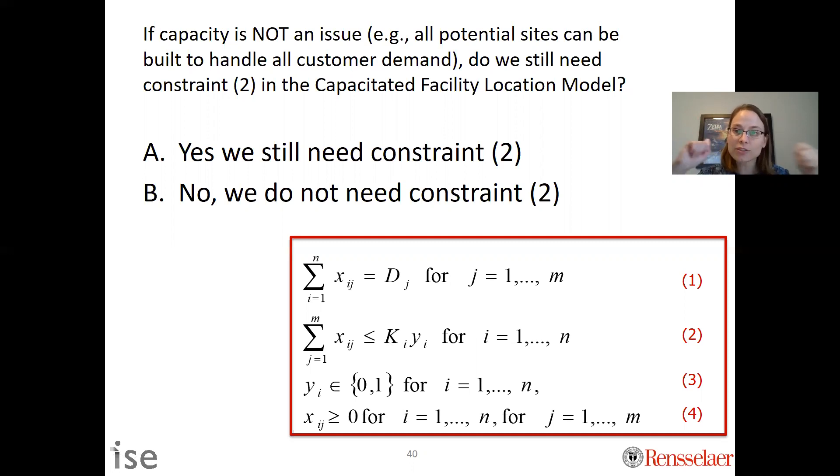We need to map these two decision variables together because what will happen if you just ignore constraint two is you will fulfill demand without turning on the y, and in the objective function you won't pay for that fixed cost. If the variable cost is really cheap, you'll use the x's from the cheap variable cost without having to consider that maybe they're built in really expensive places.